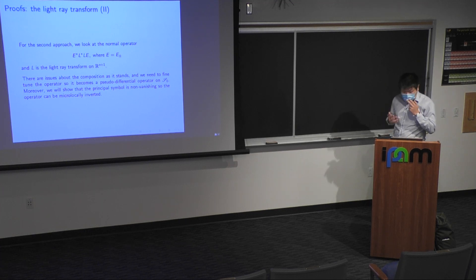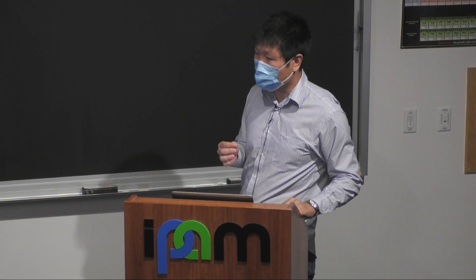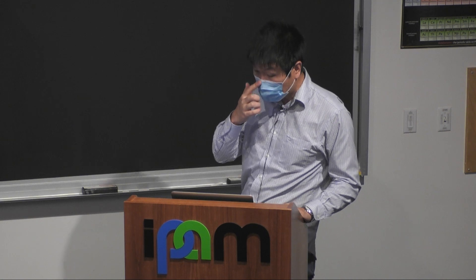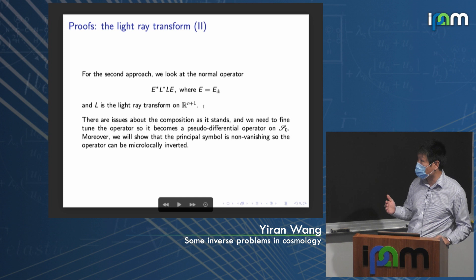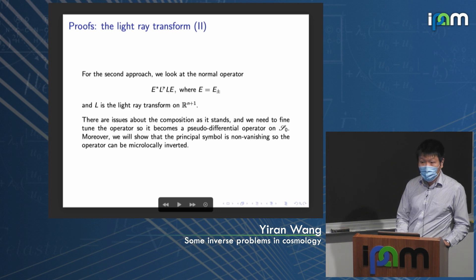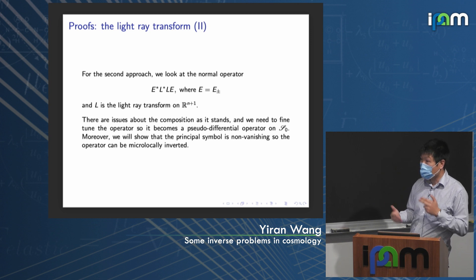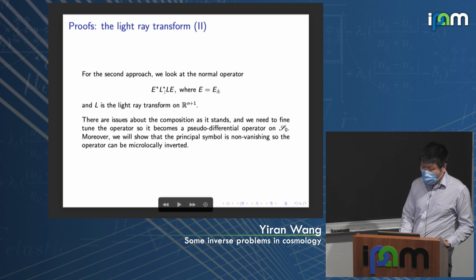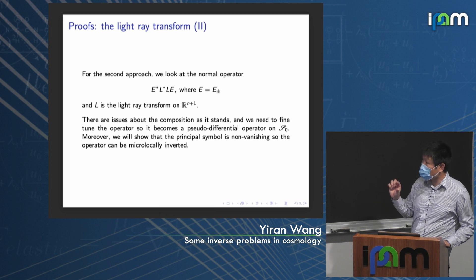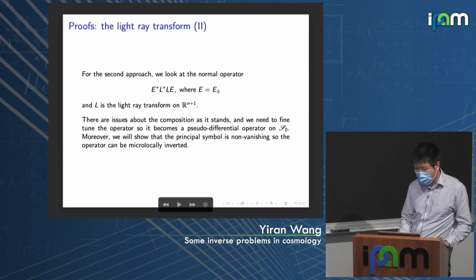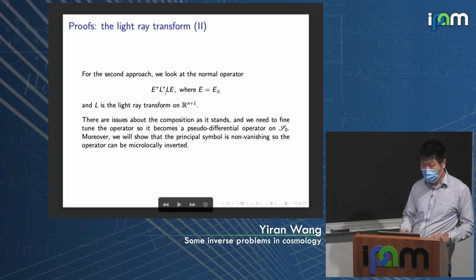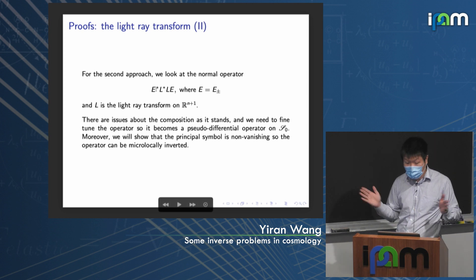For the second approach, we look at the normal operator of the composition. Replacing Xm by the light-ray transform L on the whole space R^(n+1), we look at the normal operator E* L* L E. This is natural from the point of view of tomography. However, we need to fine-tune the operator to make it a zeroth-order FIO. This relies on the microlocal structure of the normal operator L*L, whose Schwarz kernel is a paired Lagrangian distribution (as studied by Melrose-Uhlmann and Guillemin-Uhlmann). For the light-ray transform, this operator has singularities both on the diagonal and on the flowout.